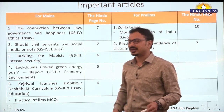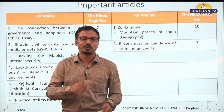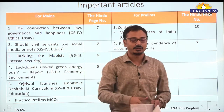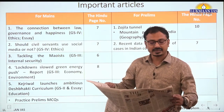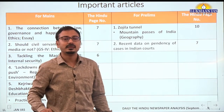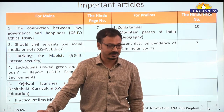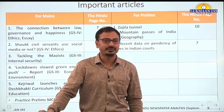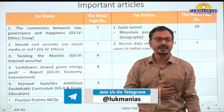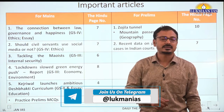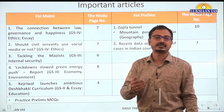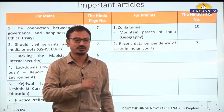We need not go into that article in detail. The first editorial on the left side talks about tackling the Maoists. This relates to GS3 paper — internal security, left-wing extremism, and Maoist insurgency in central and eastern India. The context is that the Union Home Minister has recently said that Maoist insurgency in India has reduced considerably.